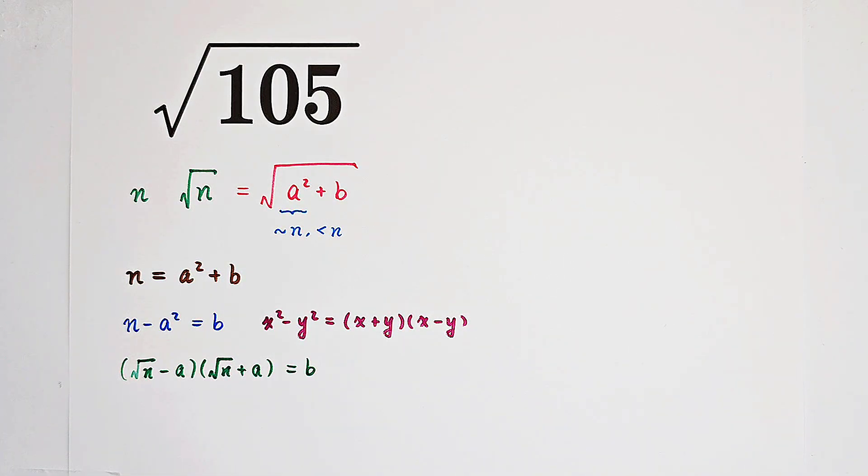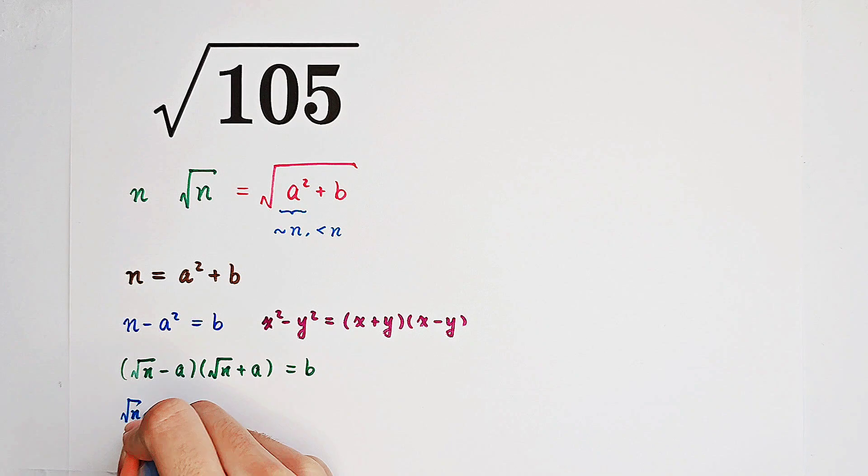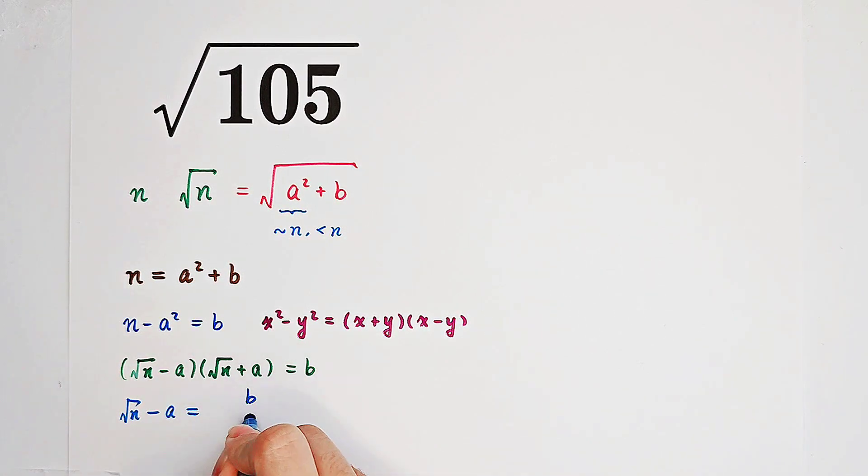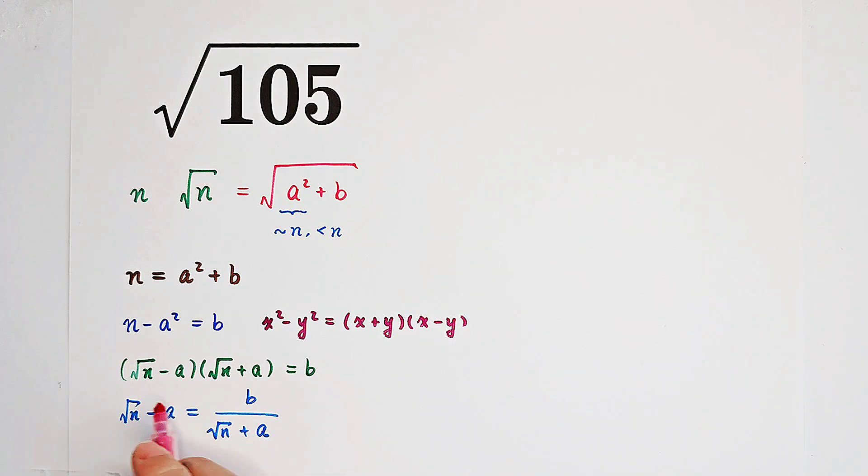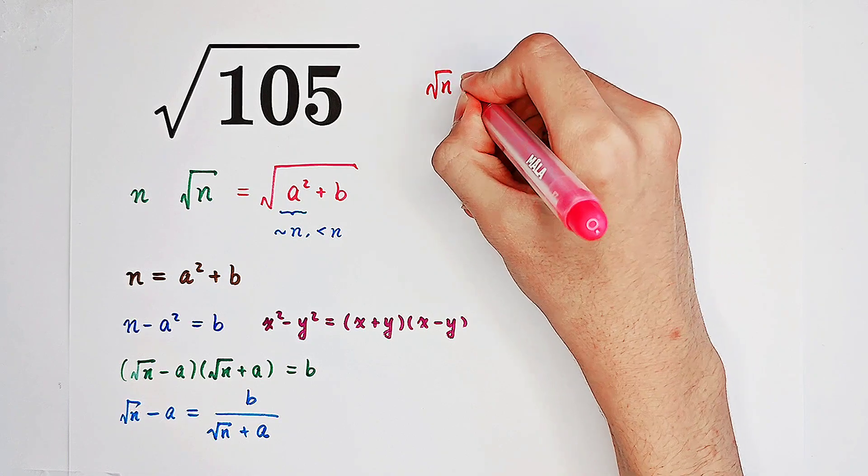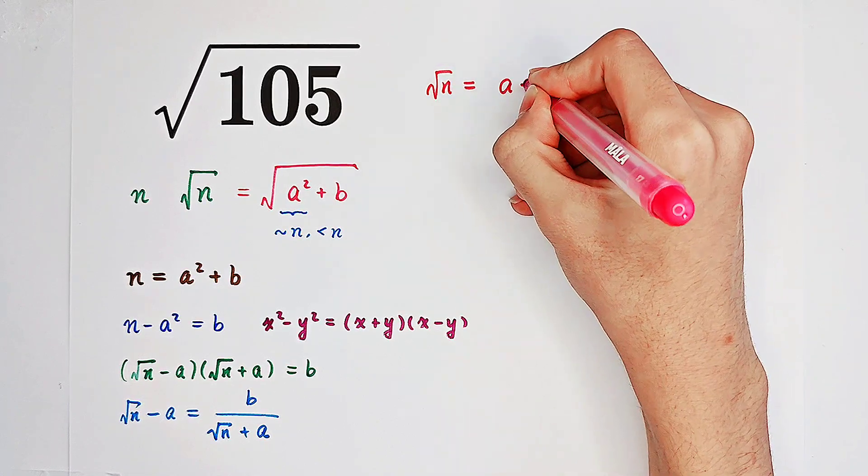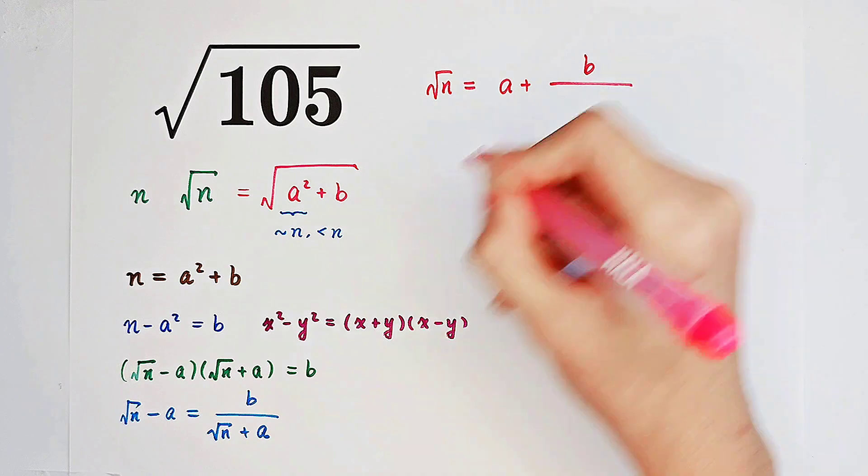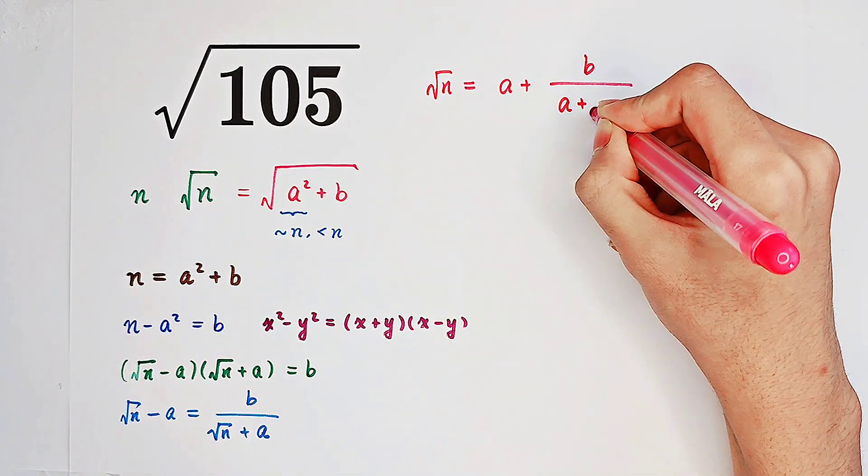Very good. Then, what I'm gonna do is divide both sides by square root of n plus a. We get square root of n minus a equals b over square root of n plus a. Look, here we have square root of n minus a is equal to this. So square root of n is a plus b over a plus square root of n.